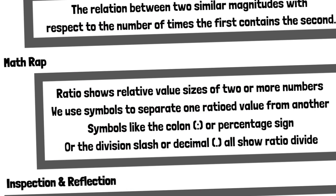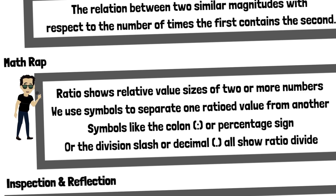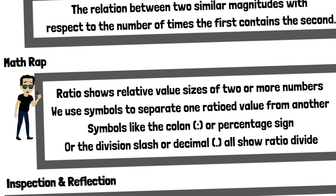Math Wrap. Ratio shows relative value sizes of two or more numbers. We use symbols to separate one ratioed value from another. Symbols like the colon, percentage sign, division slash, or decimal all show ratio divide.